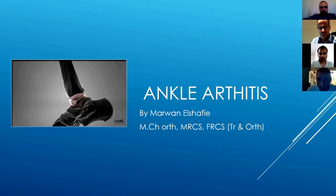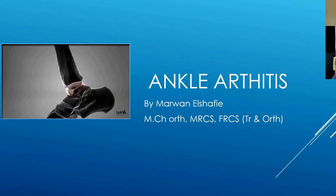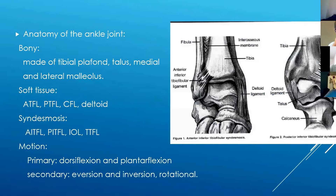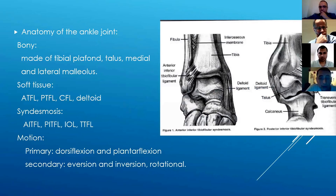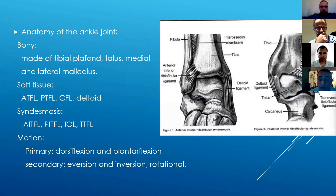Before we discuss ankle arthritis specifically, let's do a quick review of the anatomy of the ankle joint. You've got bony and soft tissue structures, and you need to know about motion as well. Bony structures include the tip of the fibula, medial malleolus, and the soft tissues include the anterior talofibular ligament, the calcaneofibular ligament, and the deltoid ligament.